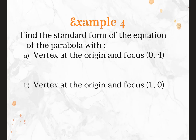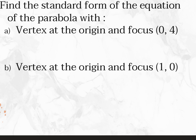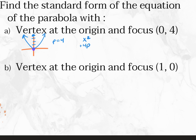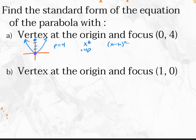Example 4A: find the standard form of the equation of the parabola with vertex at the origin and focus (0, 4). Draw a little picture. The focus is at (0, 4) so P equals 4. It opens up, which means X is squared and 4P is positive. Starting with the full equation (X minus H) squared equals 4P(Y minus K), and since the vertex is at the origin, H and K are 0: X squared equals 4 times 4 times Y, giving X squared equals 16Y.